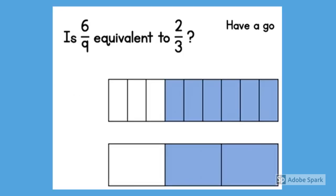So the top bar model shows a bar model split into 9 equal parts. Six of the parts are shaded. This time I shaded in from right to left. The bottom bar model is cut into 3 equal parts. And two of the parts are shaded.